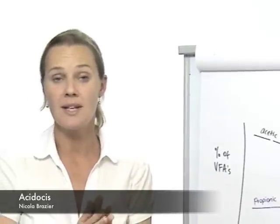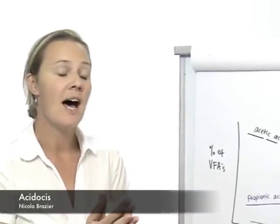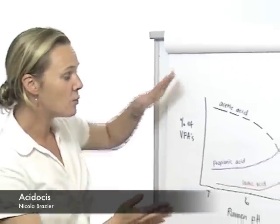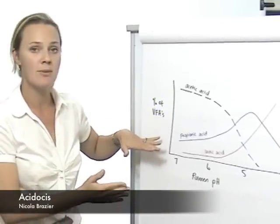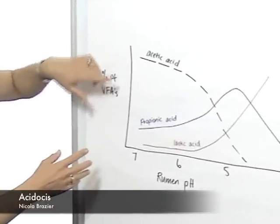Acidosis is usually associated with feeding high levels of grain and low levels of forage. It occurs when the pH of the rumen drops very quickly and the ratios of the volatile fatty acids change significantly.